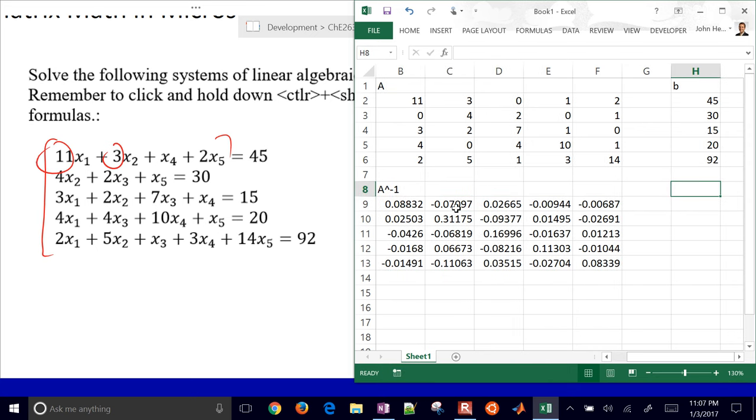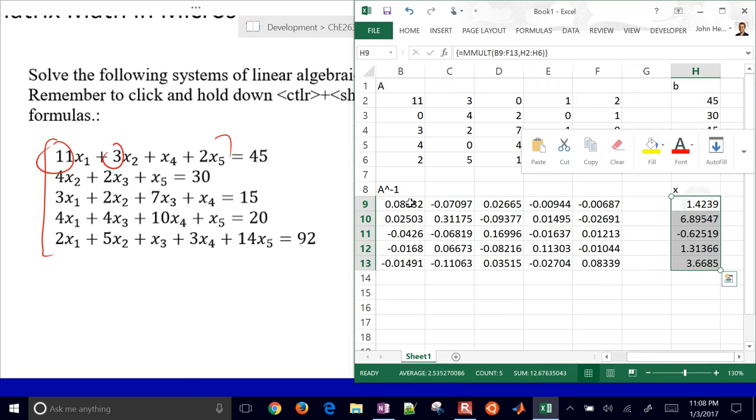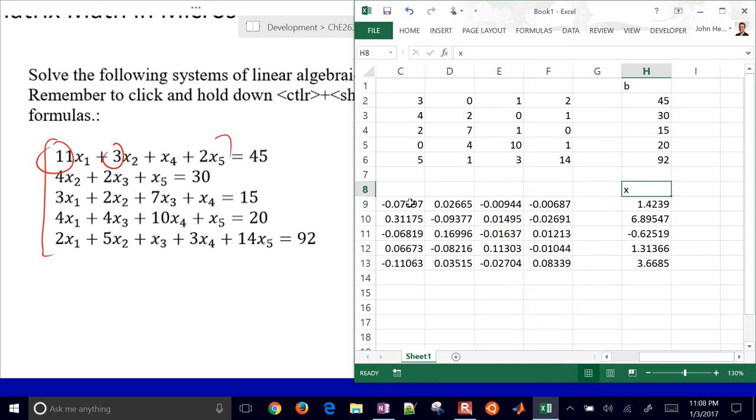And now the X solution is just going to be A inverse times B, so let's go ahead and select these five, and we'll do equals, let's do M multiply, M mult, matrix multiply, and I'll do the first one, which is going to be this region right here, and then I'll do a comma, and then select this next region right here, which is my B, and don't forget to do control, shift, and enter. So that is the solution, A inverse times B, and we've solved this set of linear equations.